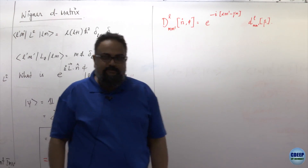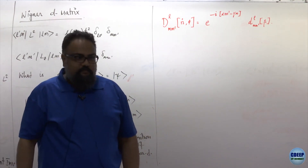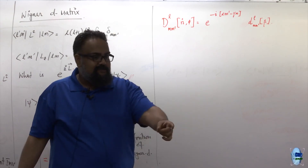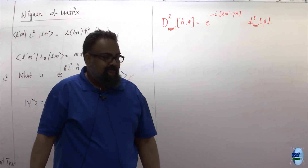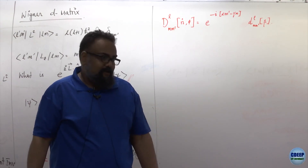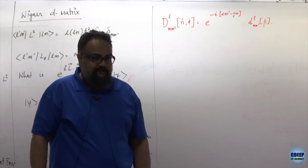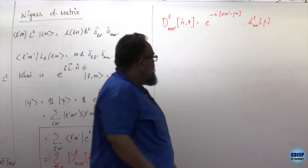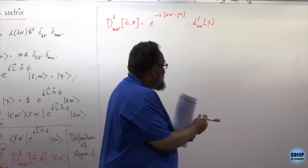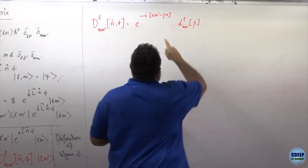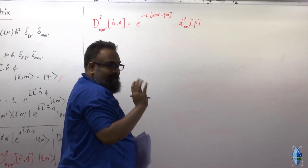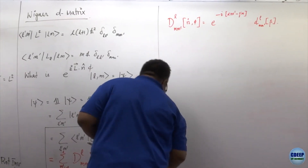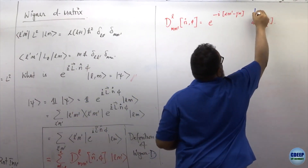Whenever you see alpha, beta, gamma and you're discussing rotations, that should suggest Euler angles. So these are the Euler angles. This is typically called the Wigner big-D matrix, and the inner part is called the Wigner small-d matrix. The proof is simply that D^L_{M,M'} of n-hat, phi, which I can write as ⟨L,M| e to the i·L·n-hat·phi/ℏ |L,M'⟩, can always be written using the Euler angle decomposition.